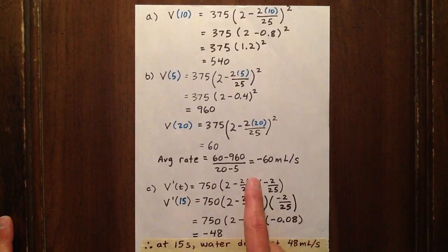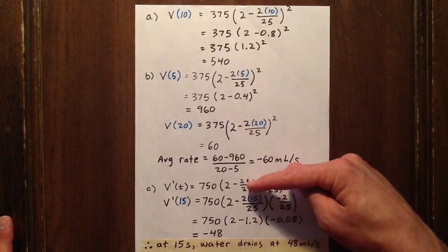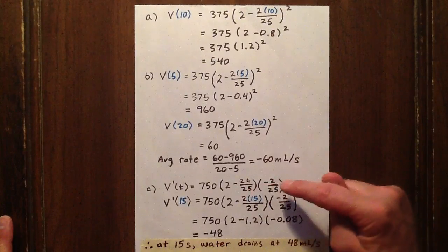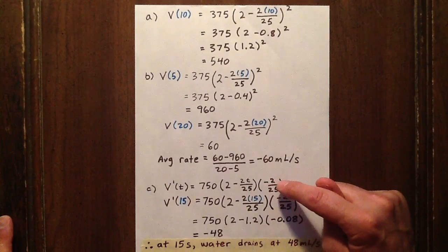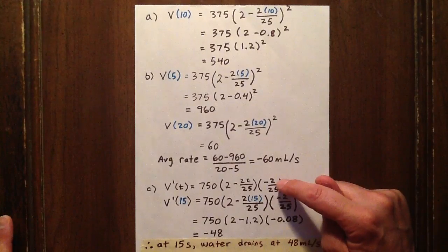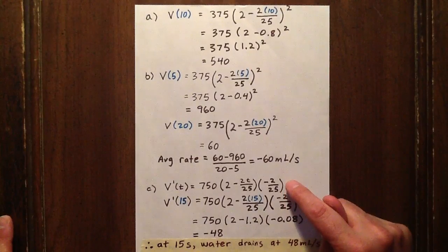But we also have to multiply by the derivative of what's inside the bracket with respect to T because it's volume with respect to time. So the derivative of 2 minus 2T over 25 is negative 2 over 25.